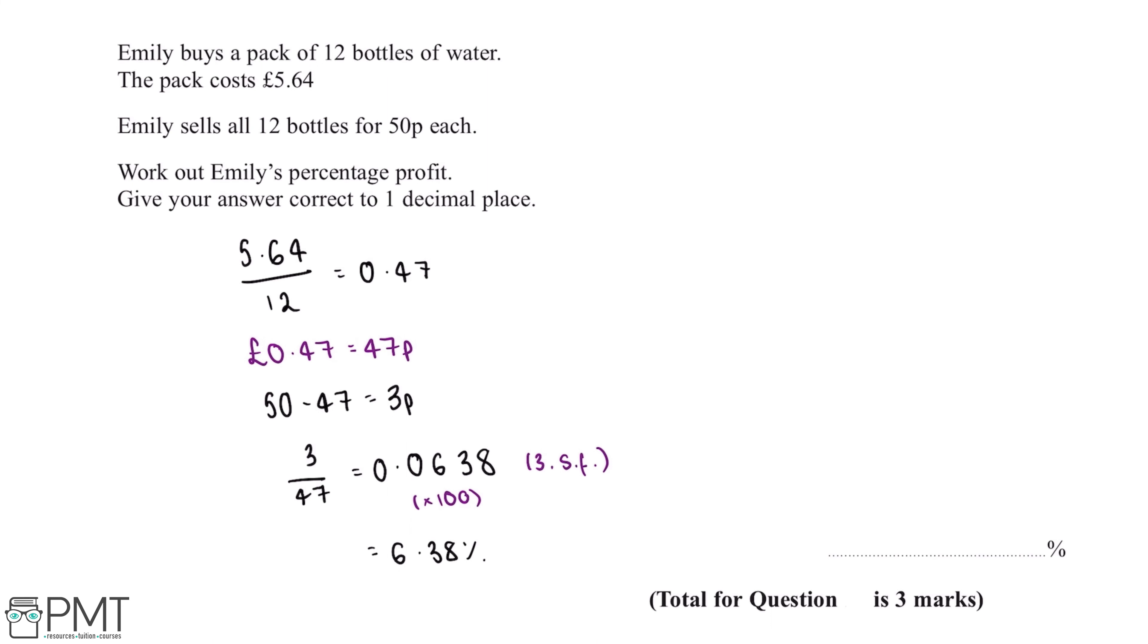And now the final thing we need to do for this question is give our answer correct to one decimal place. So 6.38 can be rounded up to 6.4%, because this 8 is greater than or equal to 5.